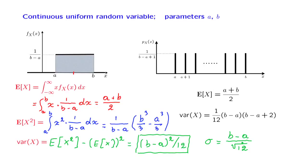A few observations. First, the formula looks quite similar to the variance formula in the discrete case, except that in the discrete case there is an extra additive factor of 2. More interestingly, the standard deviation is proportional to the width of the uniform distribution — the wider it is, the larger the standard deviation will be. This conforms to our intuition that the standard deviation captures the width of a distribution. The variance becomes larger when the width is larger, and it increases with the square of the length of the interval.